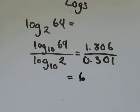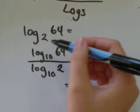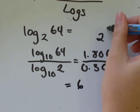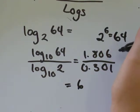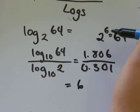Let's verify: is 2 to the power of 6 equal to 64? We'll try that on your calculator. 2 to the exponent of 6 equals 64. That's perfect. It works.